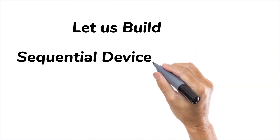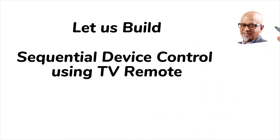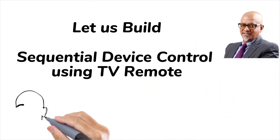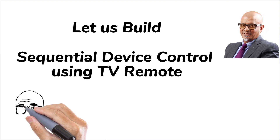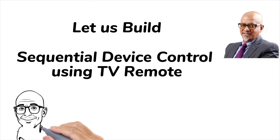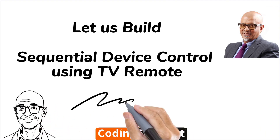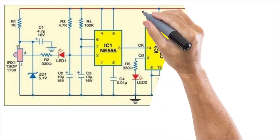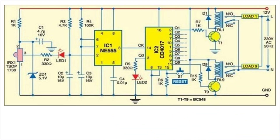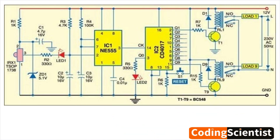Let us build sequential device control using a TV remote. This circuit lets you switch on and switch off up to 9 devices sequentially from your TV remote control. The circuit is designed to control multiple devices — load 1 to load 9 — sequentially using an IR remote control.